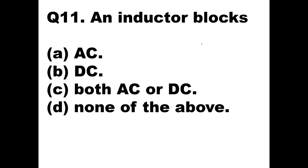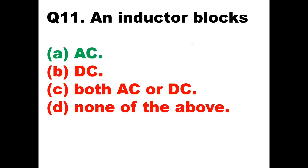Question 11: An inductor blocks — ? The reactance of an inductor is XL = 2πFL. Here F is directly proportional to reactance — if F is more, reactance is more. Higher frequency means more reactance, so the inductor blocks AC. Option A, AC, is the right answer.